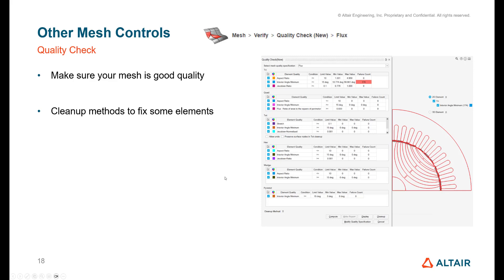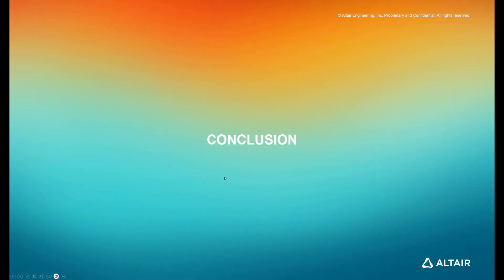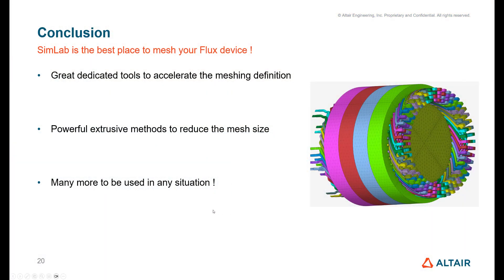As a conclusion, we can see that SimLab is probably now the best place to mesh your flux device. We've seen there's a lot of great dedicated tools to accelerate the meshing definition, so anything which is specific to an application like skin effect or motor machine, this is going to help quite a lot. There are also even tools to help you build different parts of motors, for example building the sliding cylinders and things like that. You can imagine we keep adding new stuff as well in the future release in order to make the workflow easier and faster.